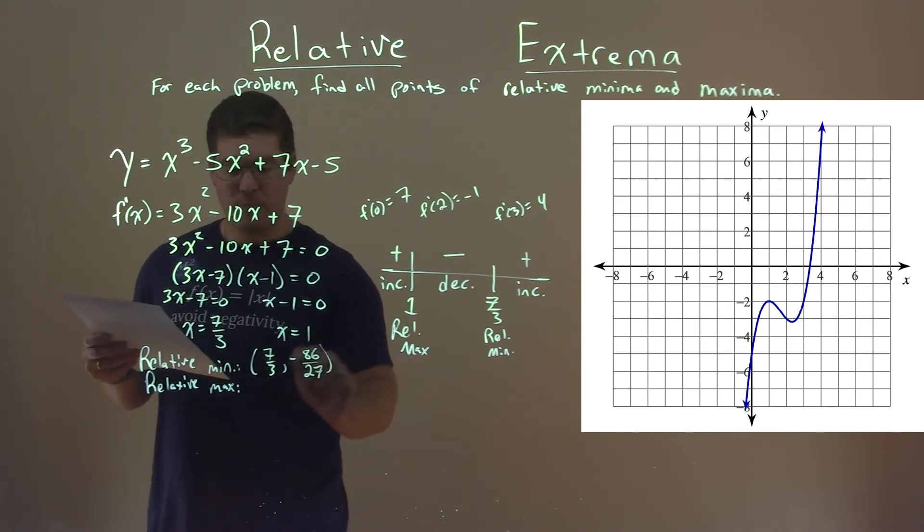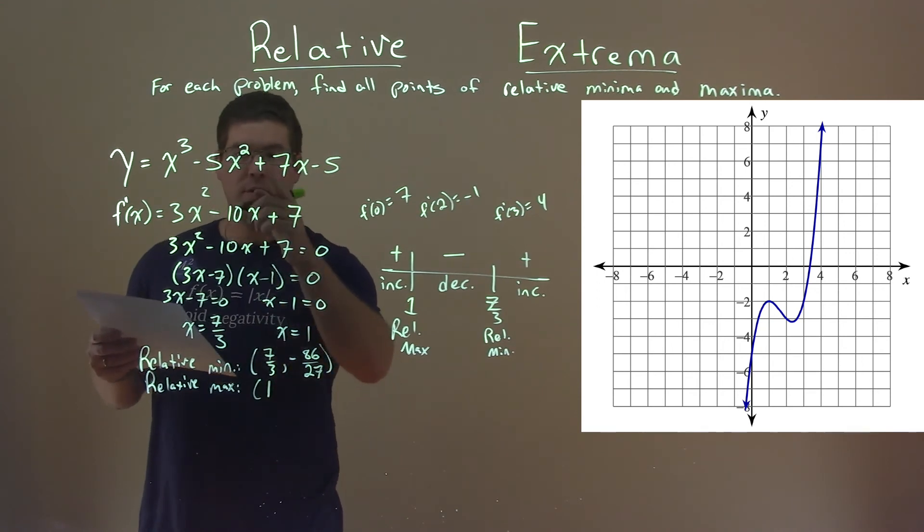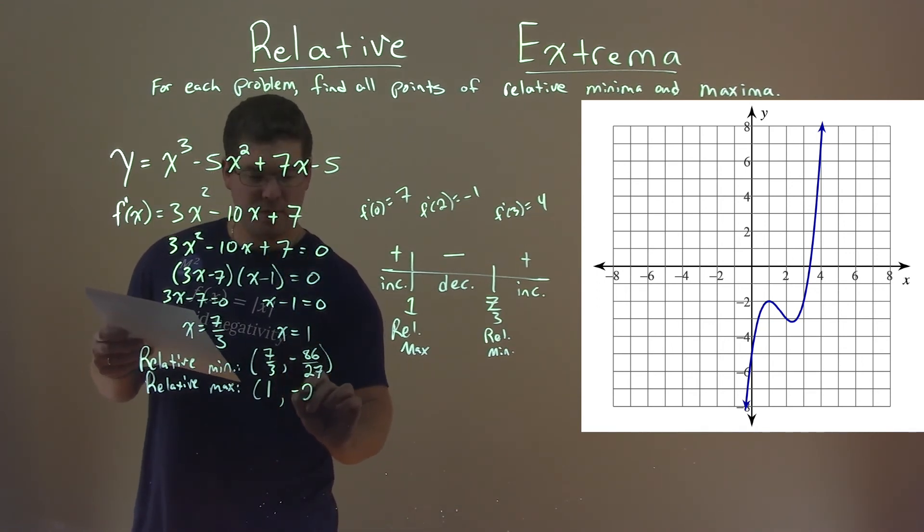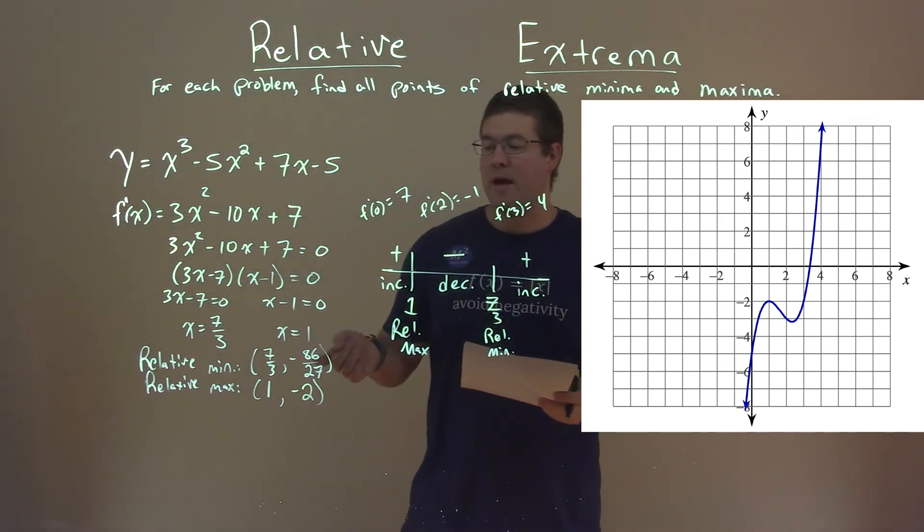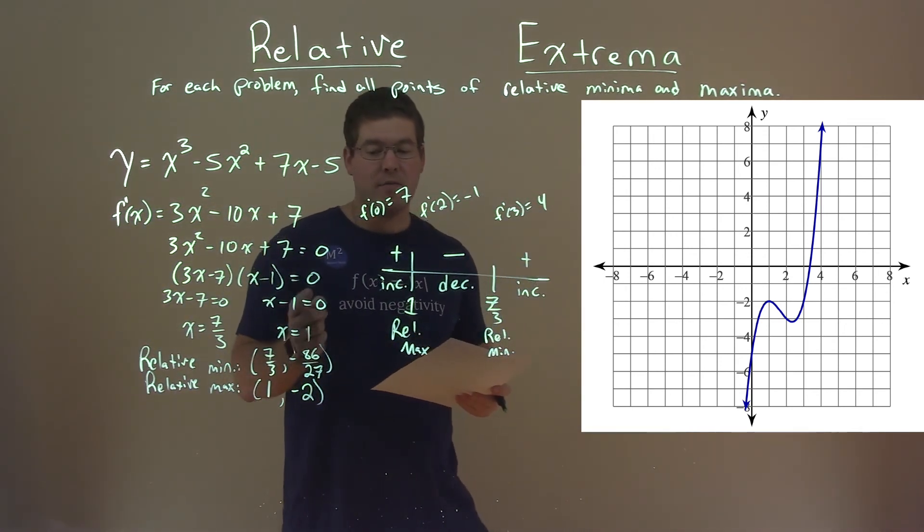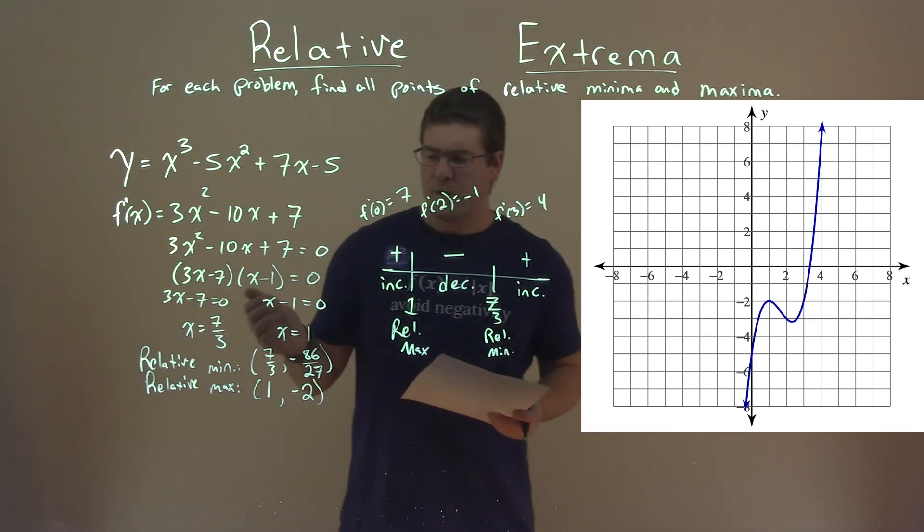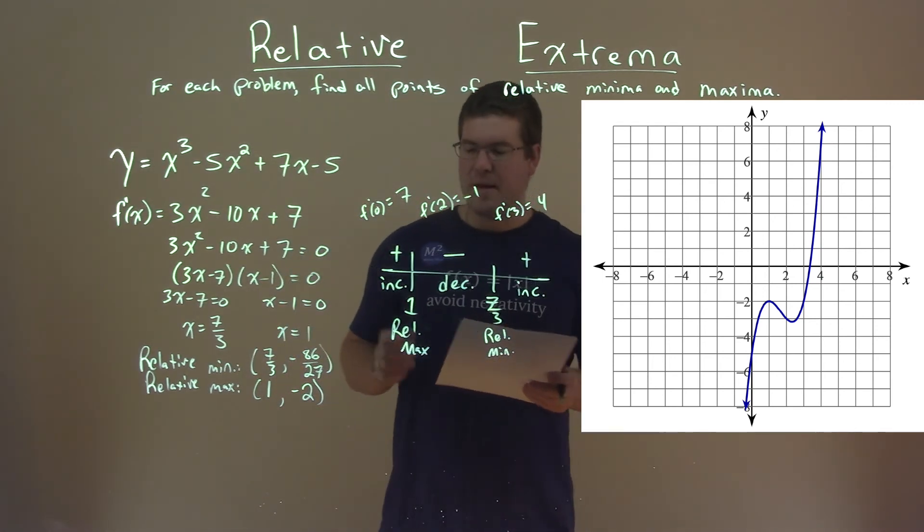And for the relative maximum, I plugged 1 into my original function up there and I got negative 2. So our final answer here is we have a relative minimum at 7 thirds comma negative 86 over 27, and a relative maximum at 1 comma negative 2.